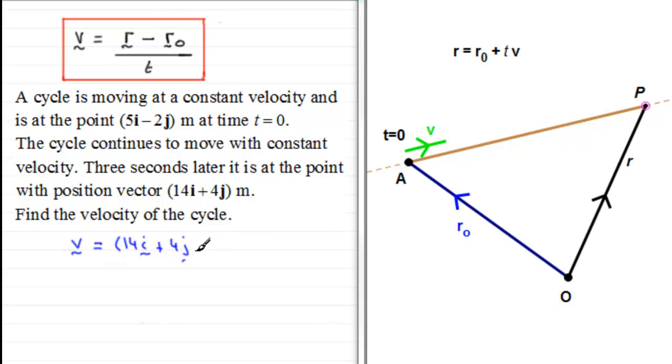And from this, we subtract its initial position vector, which was 5i minus 4j. And this gives us the displacement between the two vectors. And it took a period of three seconds to do this. So we divide by 3.